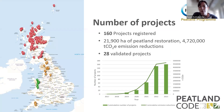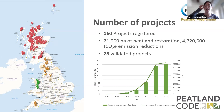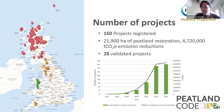We are now at 160 projects registered, just over 20,000 hectares of peatland restoration within those 160 projects, and around 4.7 million tons of CO2 emission reductions over those projects' lifetimes. 28 projects are validated. You can see on the map that most of our projects currently are in Scotland, but hopefully with the fen inclusion now we will get more projects in England and Wales as well. The graph below shows that we are growing really, really rapidly — a really steep increase there. So that's great — we're getting more peatlands restored.